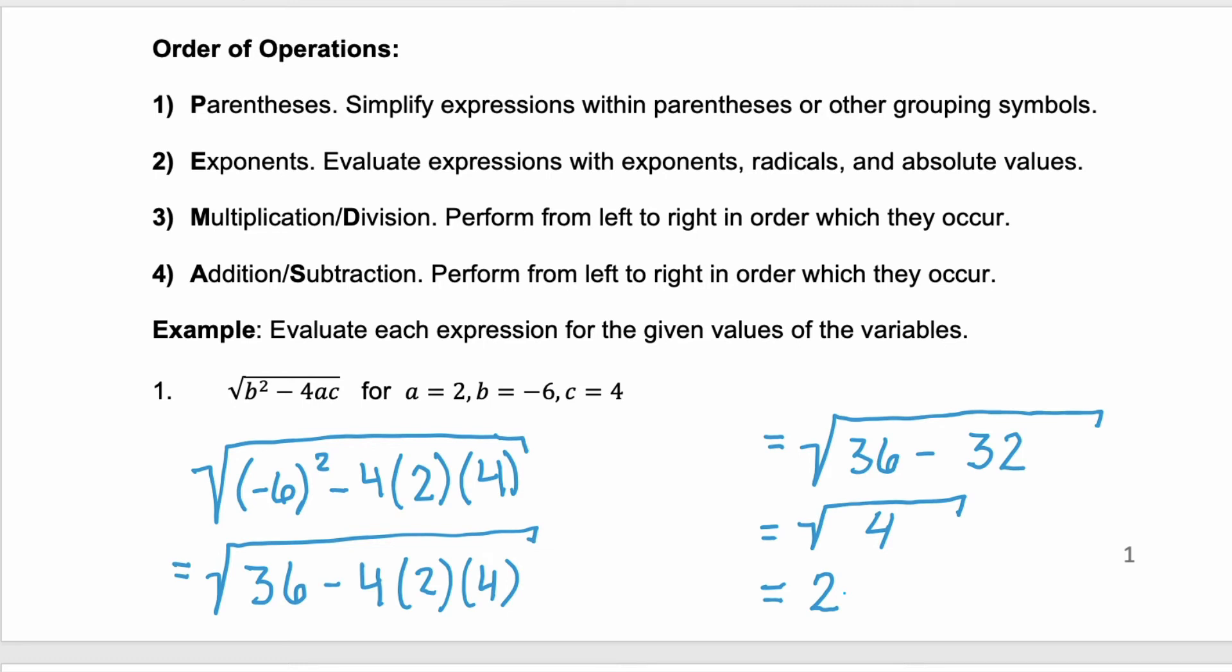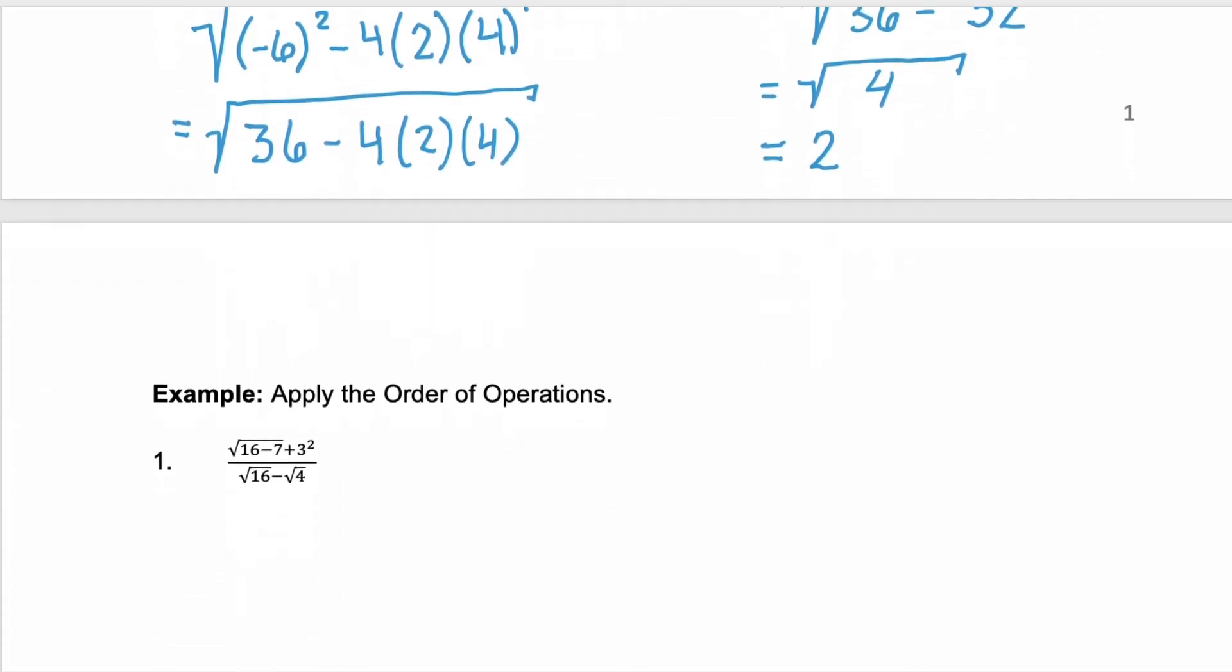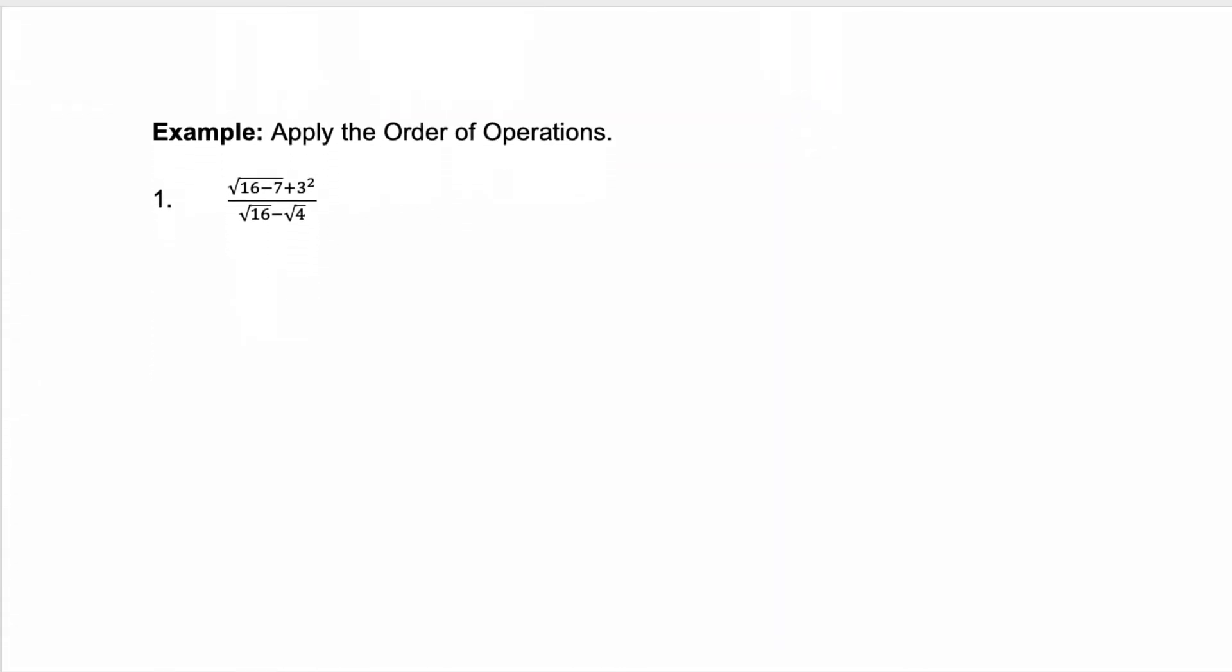Let's look at another example of applying the order of operations. And here we have a fraction and we've got a lot going on in the numerator and the denominator. Remember that our radical is a grouping symbol. So we're going to start with that. So let's start with the radical here in the numerator. And we have the square root of 16 minus seven, which would be the square root of nine. And we can rewrite the rest.